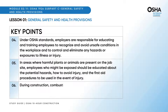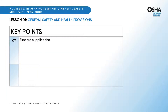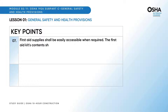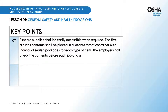During construction, combustible scrap and debris shall be removed regularly, and safe means shall be provided to facilitate such removal. First-aid supplies shall be easily accessible when required; the first-aid kit's contents shall be placed in a weatherproof container with individually sealed packages for each type of item. The employer shall check the contents before each job and at least weekly during the job to ensure that expended items are replaced.